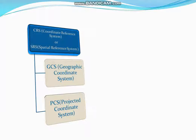GCS represents any location on the earth by latitude and longitude. It uses a 3D spherical surface to define location on the earth, and it is always based upon a spheroid or ellipsoid. As an example, I will talk about WGS 1984 — WGS stands for World Geodetic System.